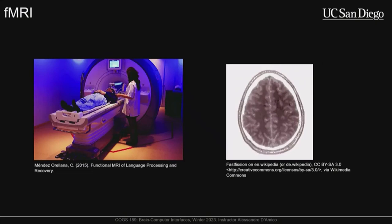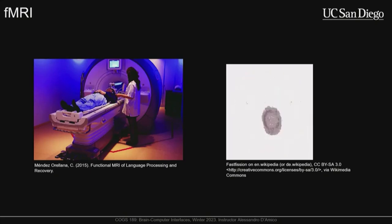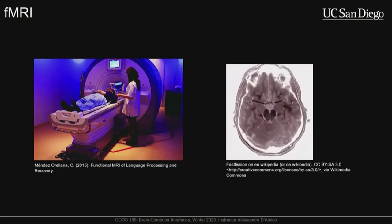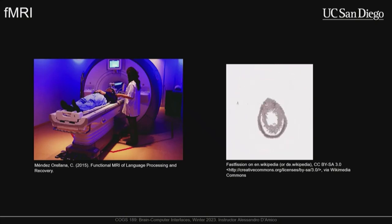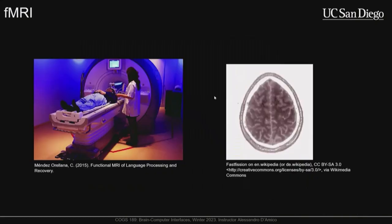I mentioned fMRI a bunch of times, but fMRI is one of the more popular non-invasive neuroimaging modalities. It's really popular for looking at what regions of the brain are activated during certain tasks. If we remember our trade-off between spatial resolution on the y-axis and temporal resolution on the x-axis, fMRI is right here — pretty poor temporal resolution, in the hundreds of seconds to minute range, but its spatial resolution is considerably better than EEG.